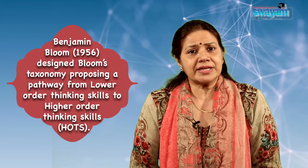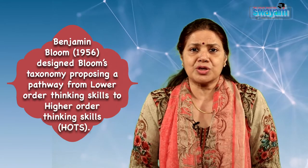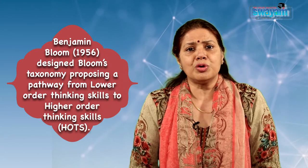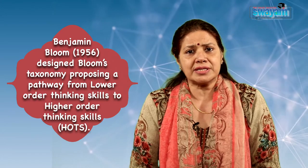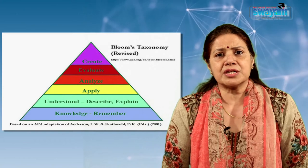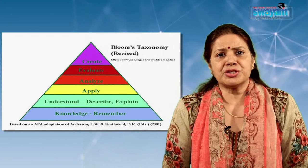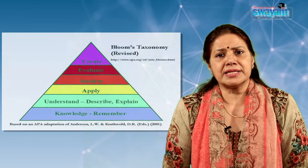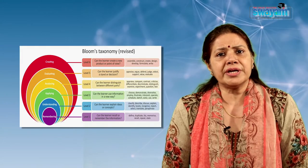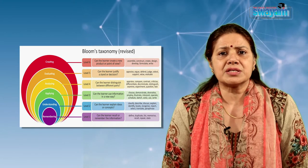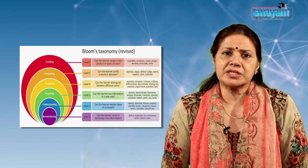Benjamin Bloom in 1956 published a framework for categorizing educational goals known as Bloom's Taxonomy of Educational Objectives. He proposed a pathway from lower order thinking skills to higher order thinking skills. It categorized human behavior into three domains: cognitive, affective, and psychomotor. This framework consisted of six major categories under the cognitive domain — knowledge, comprehension, application, analysis, synthesis, and evaluation — arranged from simple to complex, and from concrete to abstract, where each level must be completed before progressing to the next.